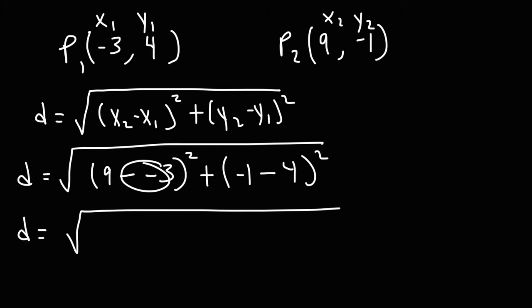Now, notice that we have two negative signs next to each other. 9 minus negative 3 is the same as 9 plus 3. And so that becomes 12. Negative 1 minus 4, that's negative 5. 12 squared, that's 12 times 12, which is 144.